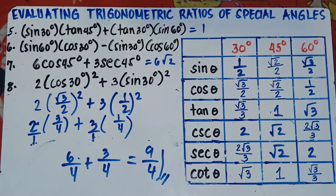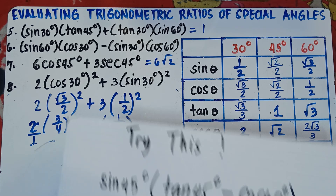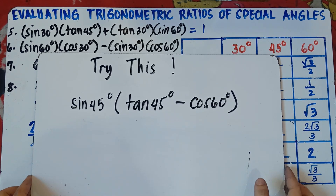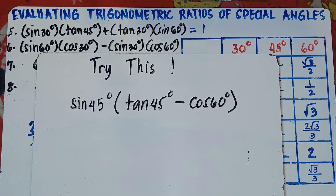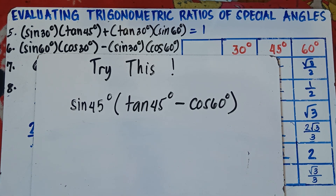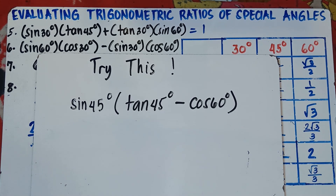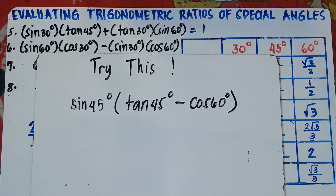Here's a practice problem for you: sine 45 degrees times the quantity (tangent 45 degrees minus cosine 60 degrees). Put your answer in the comment section below so I can check if you really understand our topic. This is Teacher MJ — I hope you learned something new today. Don't forget to like, share, and subscribe, and share it with your friends and classmates so we can help more students.